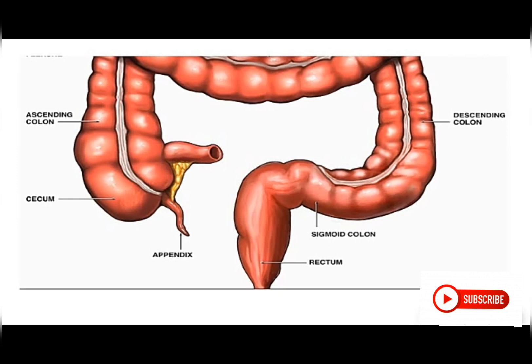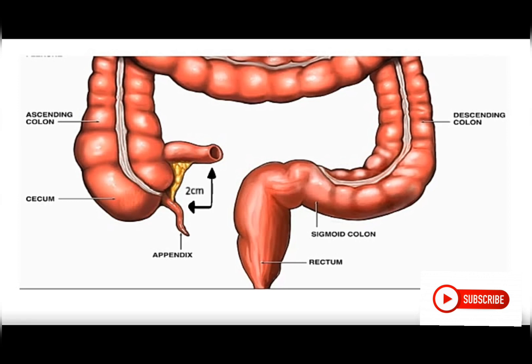In the abdomen, the small intestines are located centrally whilst the colon or large intestine is located peripherally. At the right iliac fossa we have the terminal end of the cecum. At the terminal end of the cecum we have structural lines called the taenia coli — there are three of them. These taenia coli converge at a point two centimeters below the ileocecal valve, where we have the appendix.